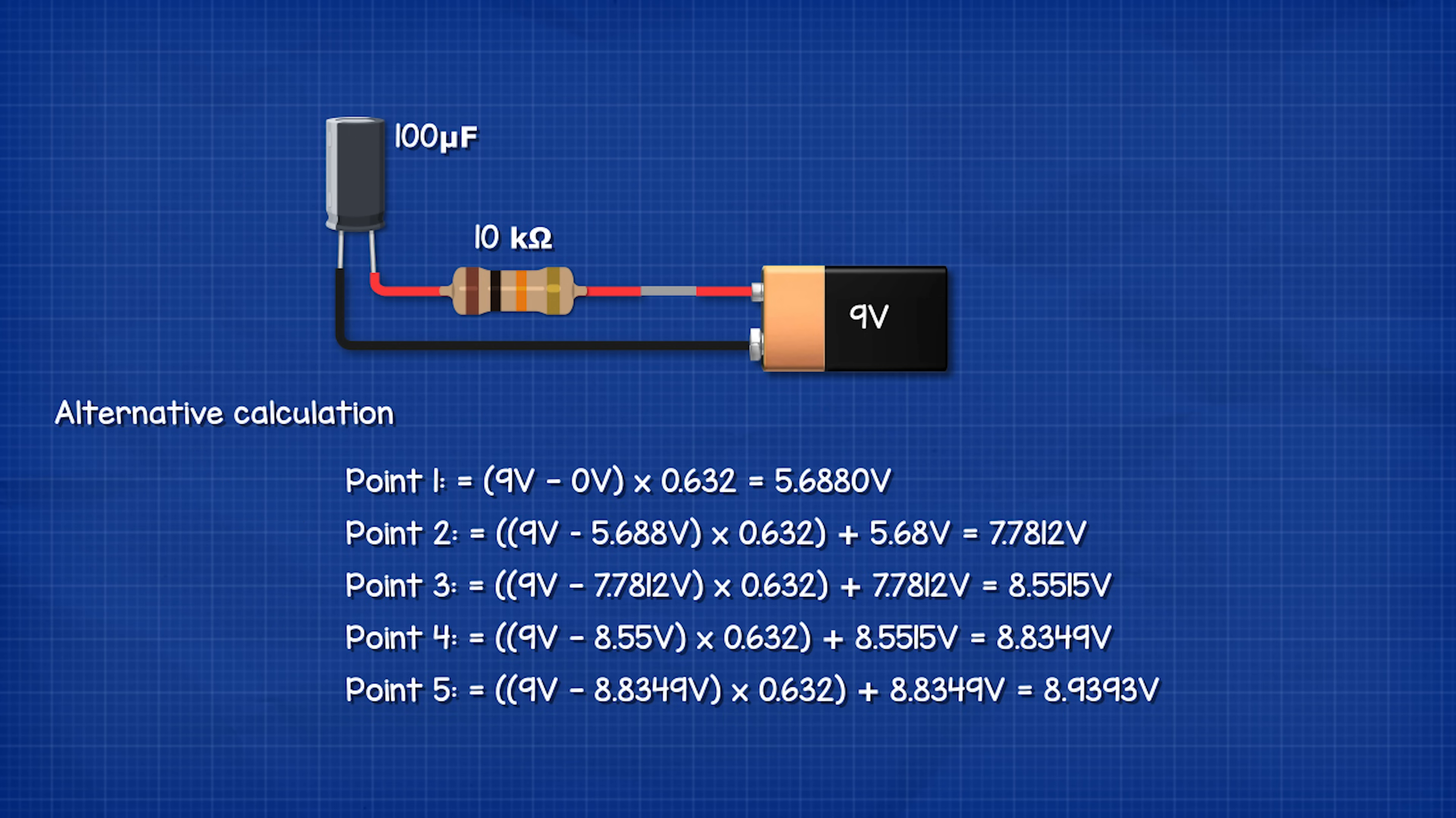So in this example after one second the capacitor voltage is 5.68 volts. After two seconds it's 7.78 volts. After three seconds it's 8.55 volts. After four seconds it's 8.83 volts. And after five seconds it's 8.94 volts.